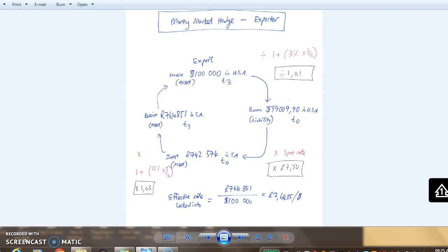Currently the spot rate is 7.50. If the rand strengthens we're going to receive less, if it weakens we're going to receive more. We don't want to be exposed so we're going to hedge. This is the money market hedge.